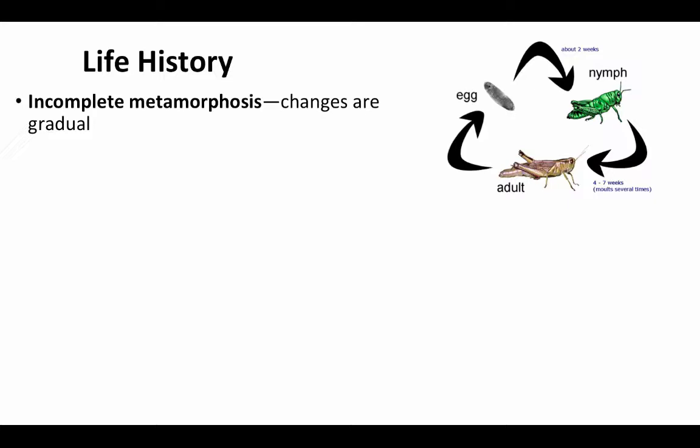There's also variation in life history among insects. One possibility is incomplete metamorphosis, where the changes are gradual and the body form doesn't change in any extreme way between juvenile and adult. The insect hatches in a nymph form — usually wingless and smaller than the adult, but recognizable as the same species. When they go through their final molt, they take their adult form with wings and become reproductively ready.